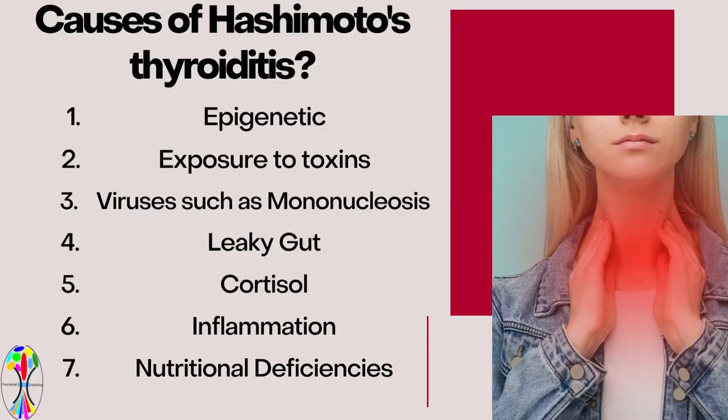The causes of Hashimoto's thyroid disease. We have to understand that there is an epigenetic component to this disease. What that means is that if you have any member of your family that has Hashimoto's thyroid disease, then you are predisposed to having this disease. However, it is not necessary that you will get this disease. A lot will depend on what kind of exposures you have during your lifetime, because certain exposures can lead to the development of Hashimoto's thyroid disease.